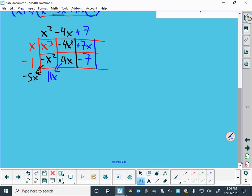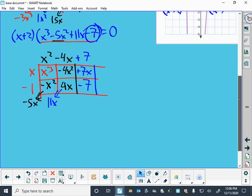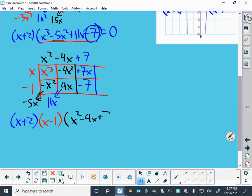So now my problem has become, I need to see what I had up there to begin with. I have the x plus 2 that I pulled out first, and then the x minus 1, and what's left is an x squared minus 4x plus 7,